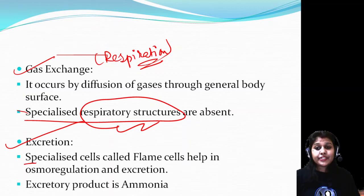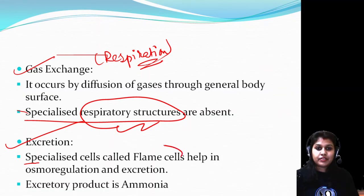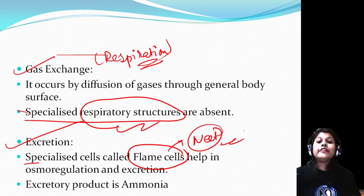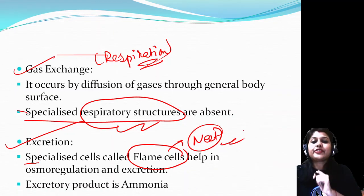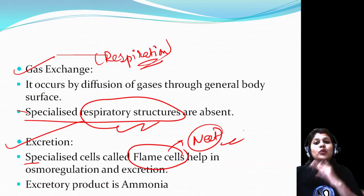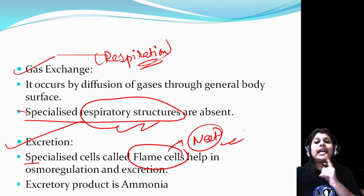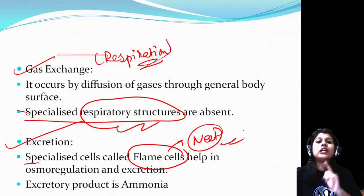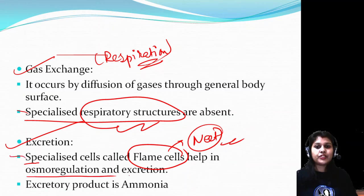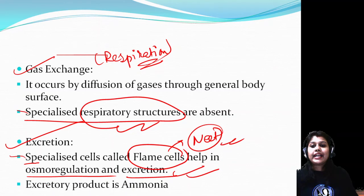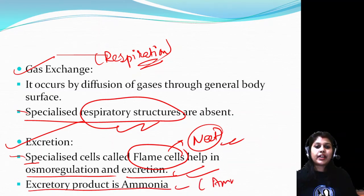Excretion: specialized cells called flame cells are present. This is an important point for exams. Nitrogenous waste products leave the body through flame cells. So unlike cnidarians, Platyhelminthes have specialized excretory structures. Flame cells are present and help in osmoregulation and excretion. The excretory product is ammonia, so they are called ammonotelic.